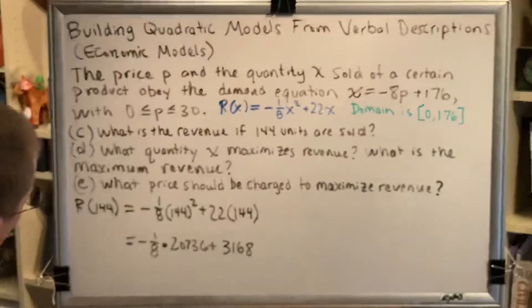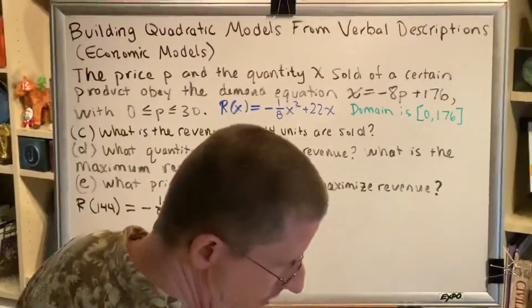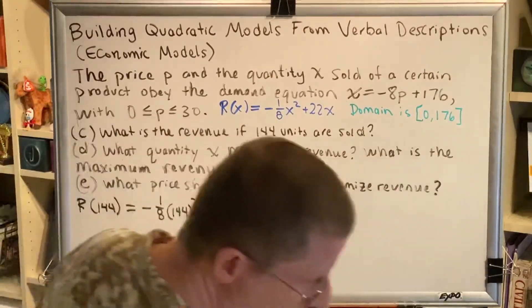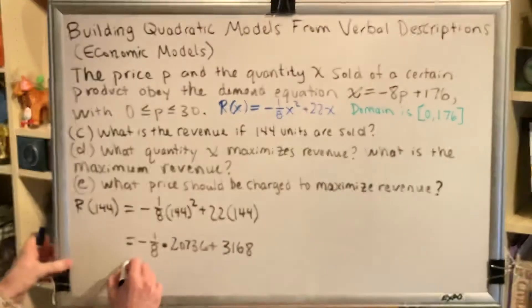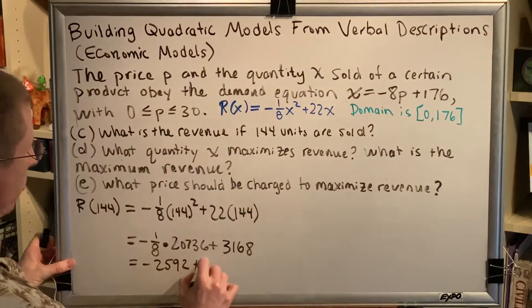Okay. Now, we have to be careful with the fractions here. Multiplying by 1/8 is the same as dividing by 8. So I'm going to do 20,736 divided by 8, then make it negative, and I get negative 2592 plus 3168.